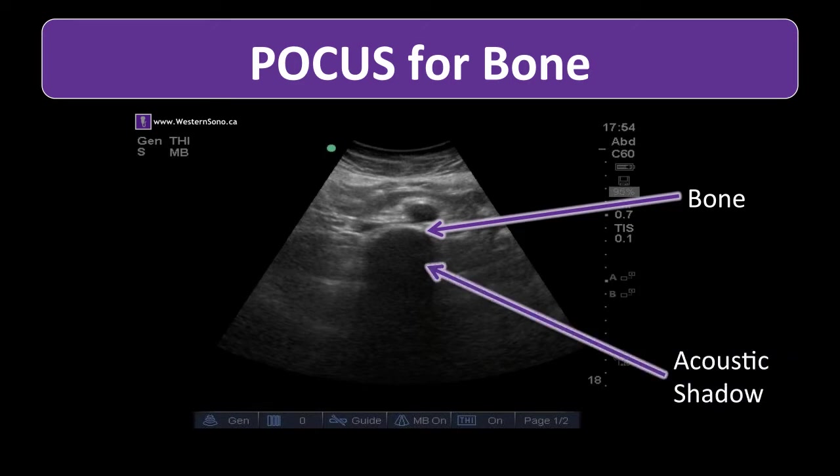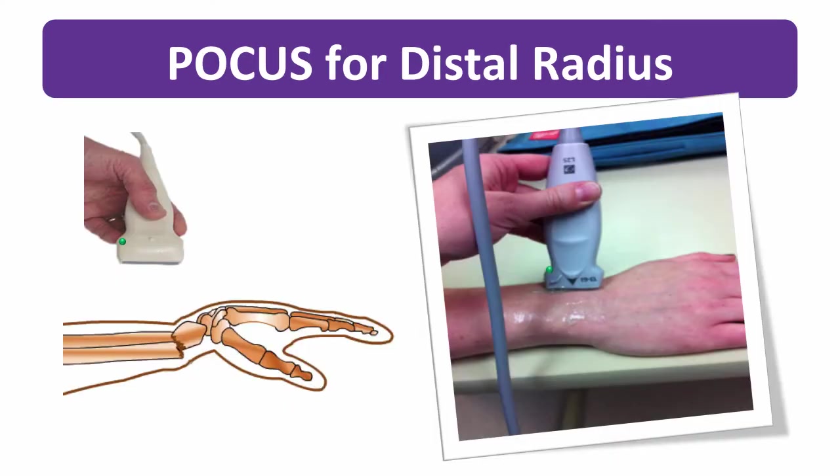We use that acoustic shadow to our advantage as a landmark denoting the spine in our point-of-care assessment of the aorta. Now we are going to use the same principle to identify the bone itself and look for disruptions in the cortex, like we will see with a displaced fracture.